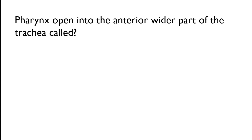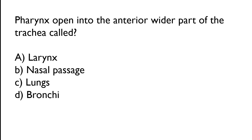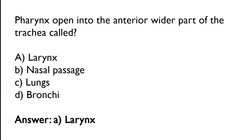Pharynx opens into the anterior wider part of the trachea called: larynx, nasal fascia, lungs, bronchi. The correct answer is option A — pharynx opens into the anterior wider part of the trachea called larynx.